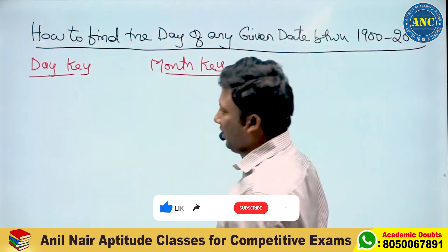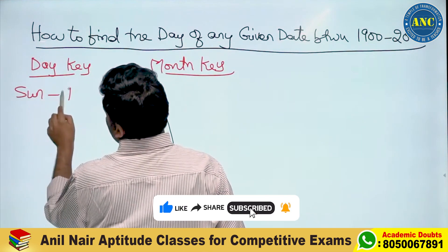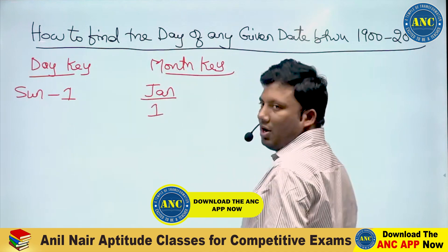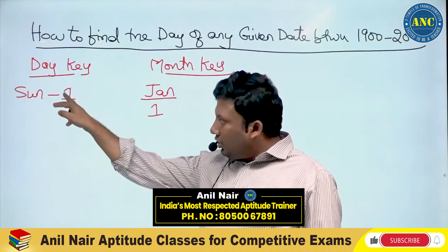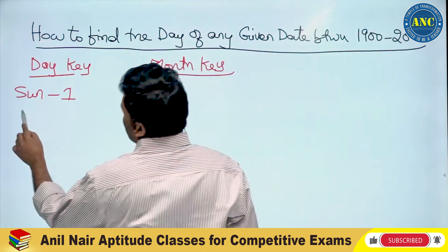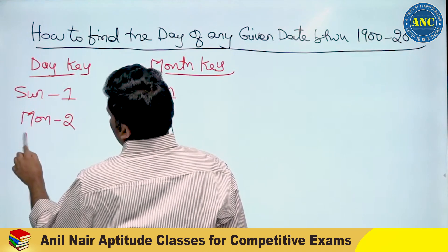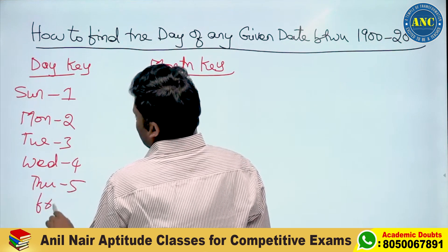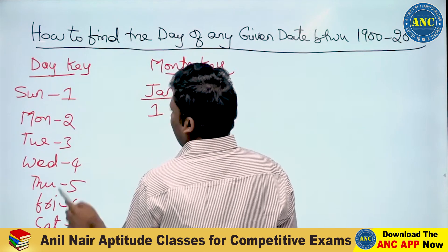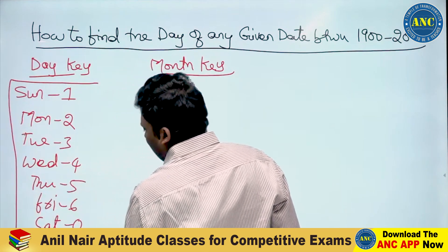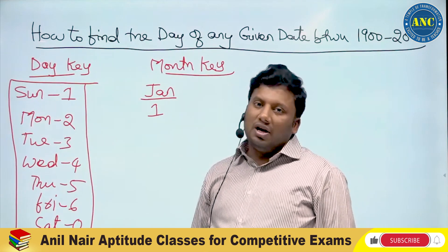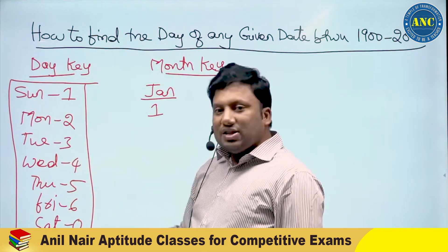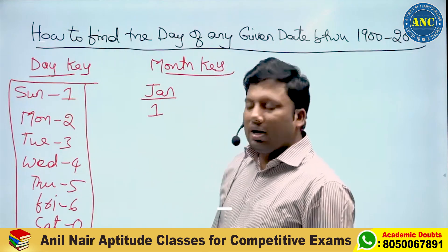Both the day key and month key should lie at the same point of reference. If you take Sunday as zero, January should be zero. If you take Sunday as one, January will be one — both should start with the same value. Day key: Sunday 1, Monday 2, Tuesday 3, Wednesday (Venus day) 4, Thursday 5, Friday 6, Saturday 0 (divided by 7). You can also start with Sunday as zero.